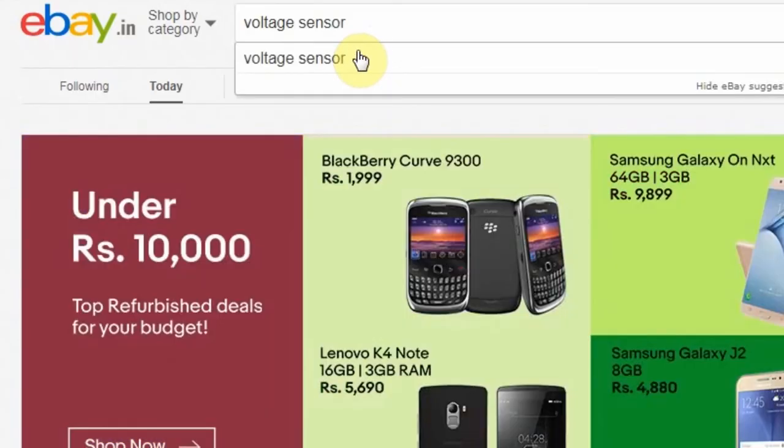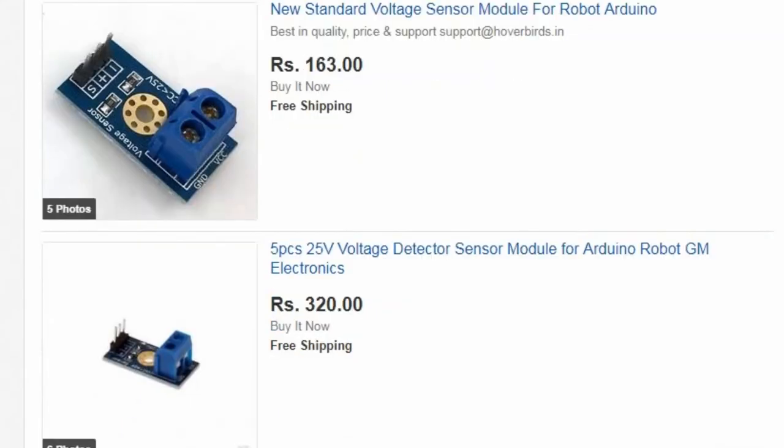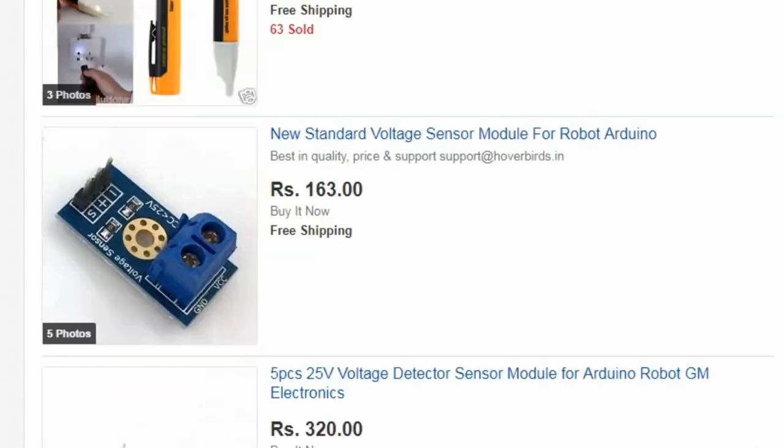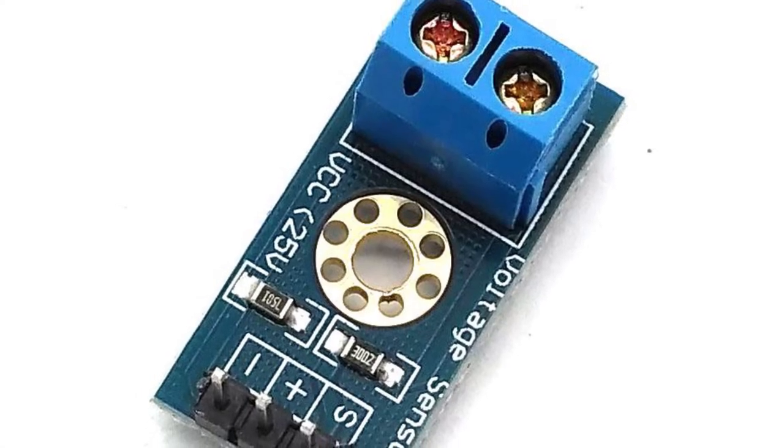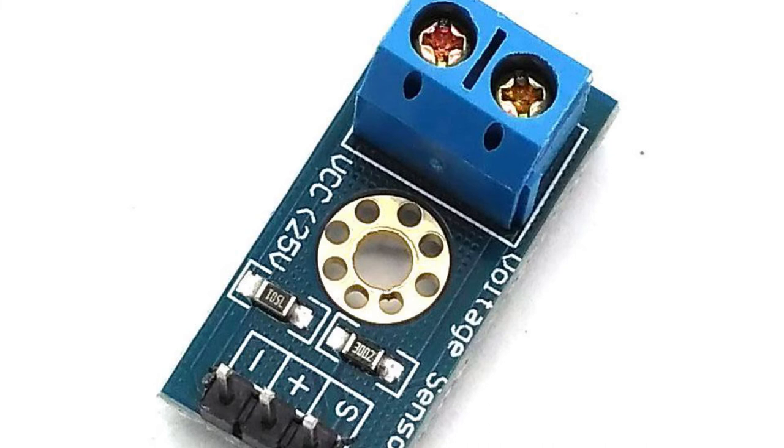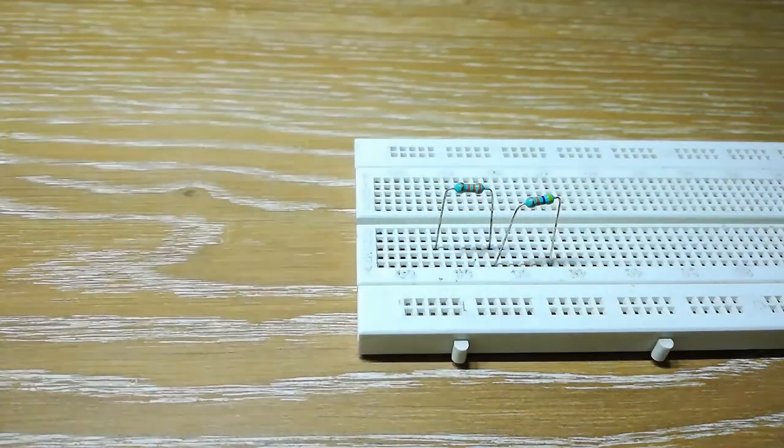This method can be applied to any voltage range. The commonly available voltage sensor modules are nothing but just a voltage divider circuit. These are rated for 0 to 25 volts with 30 kilo ohms and 7.5 kilo ohm resistors. So why to buy when you can DIY?